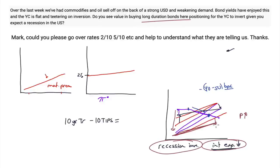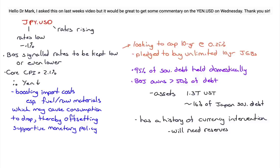Now a question about the yen. In the US you have rates rising, and in Japan rates are still negative — the BOJ has the target rate at negative 0.1% and has said they may go even lower. Their core CPI is sitting at 2.1%, so they have the luxury of sitting on that for a while. The yen is dropping in value because of the interest rate differential, but there's a bit of a problem here.